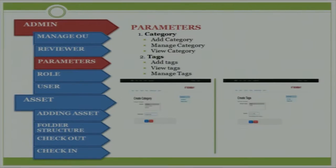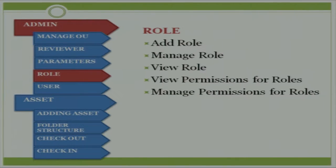The third module is the parameter module, where the admin adds categories and tags to the organization. Tags and categories help in search functionality — when an asset needs to be searched, the system looks up the tags table. Assets are stored in a folder structure and maintained in the database along with all logs, organized by organization ID. There are also different roles such as reviewer, and the organization can add roles and assign permissions to them.